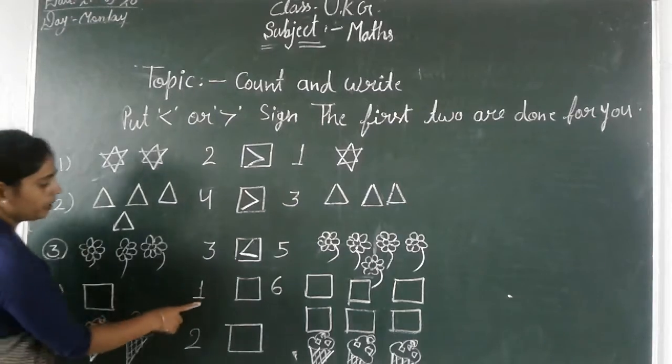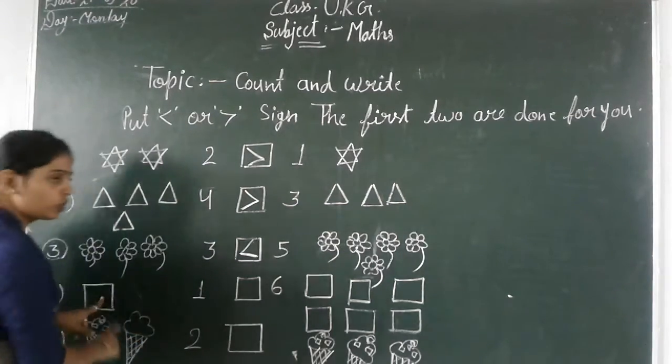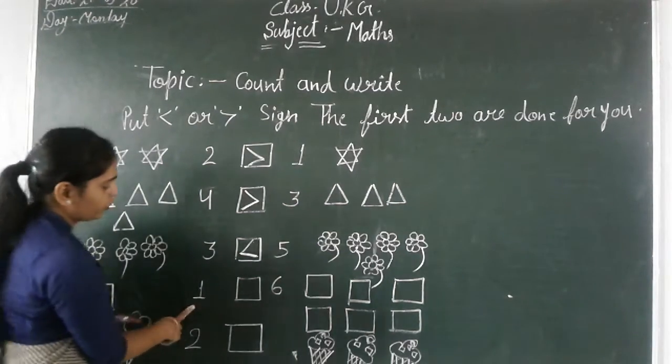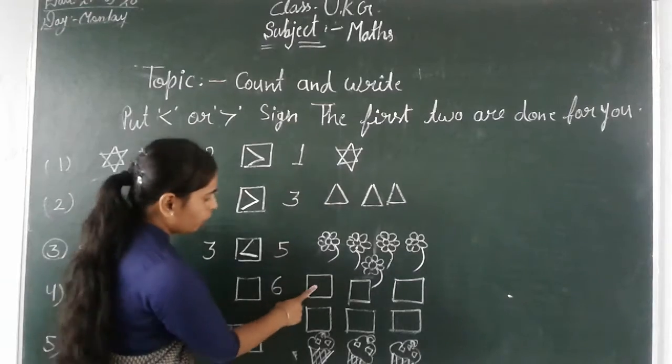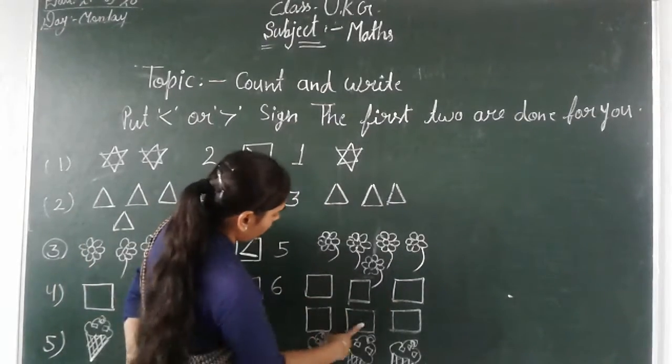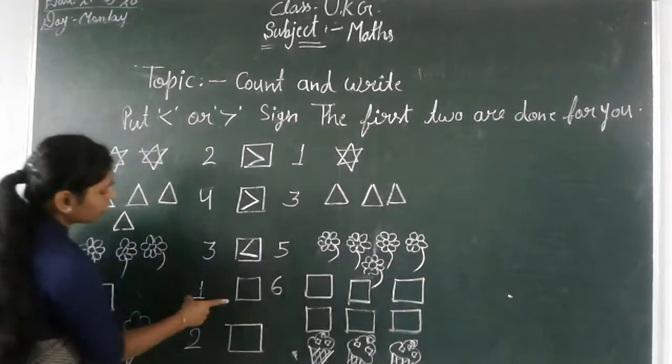Again, the fourth number. One, two, three, four, five, six. Six is the same. So, this is the same.